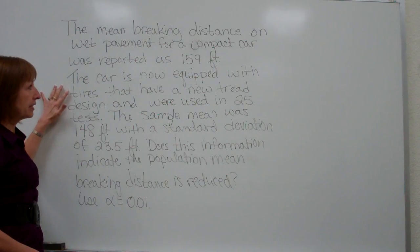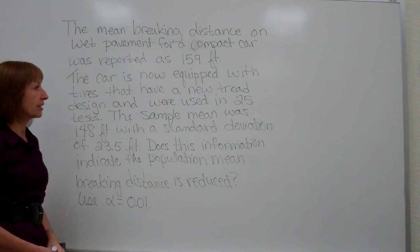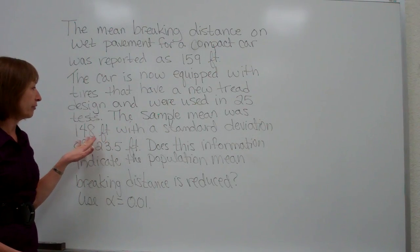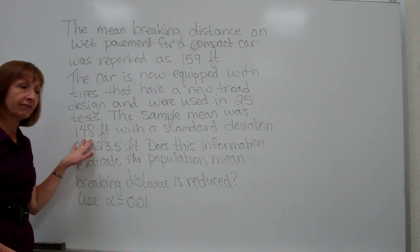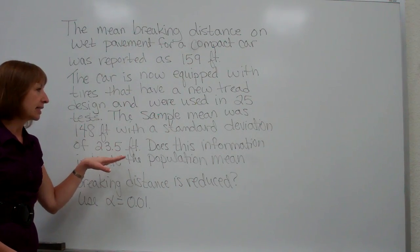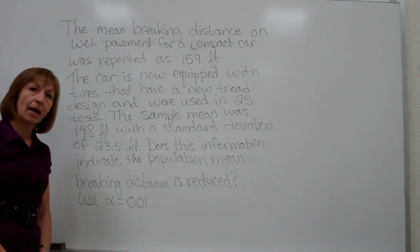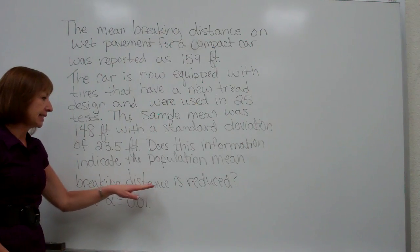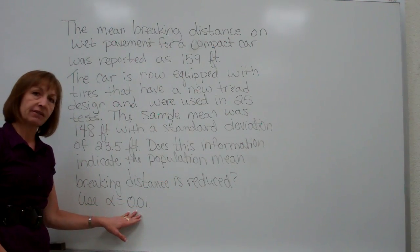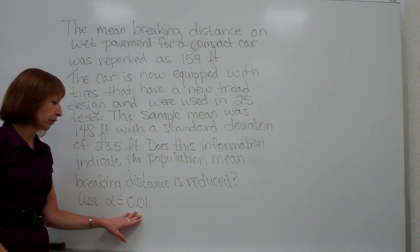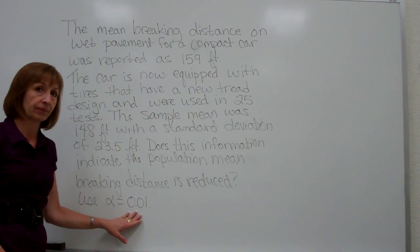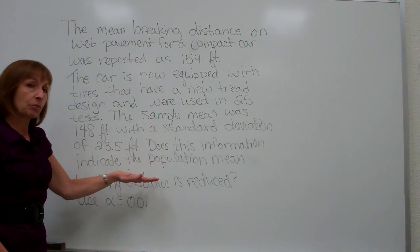The car is now equipped with new tread design tires and were used on 25 tests. The sample mean from these tests was 148 feet with a standard deviation of 23.5 feet. Does this information indicate that the population mean braking distance is reduced? Use a level of significance of alpha equals 0.01, or it could also say use a level of significance of 1%.